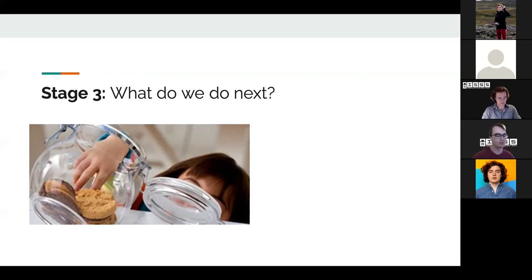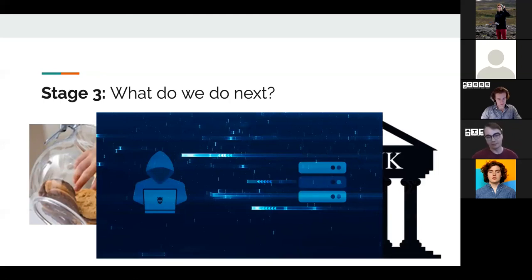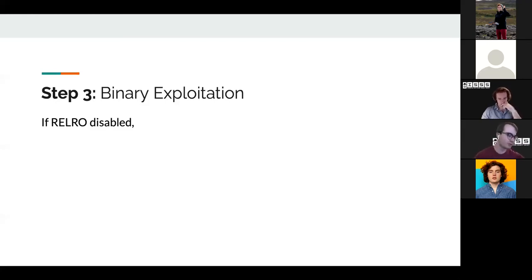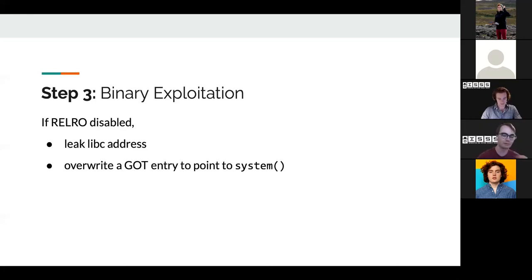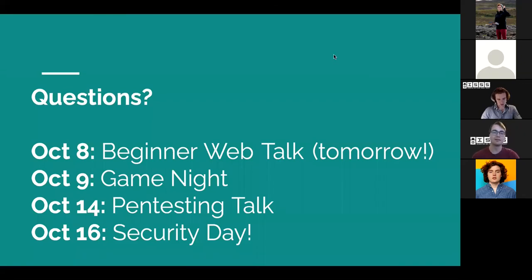We could use those cookies to log into your bank account and steal money. Or we could open a reverse shell using other primitives. If you know binary exploitation, when a specific protection is disabled we can leak libc's address and override a GOT entry to point to system, then call /bin/sh. Otherwise we can do a ROP chain by finding the stack through our read/write primitives and then ROP to system. Basically, once we have this bug we can create a later-stage exploitation and do whatever we want.